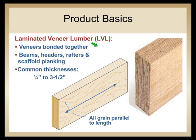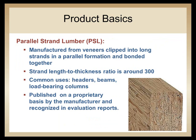LVL is available in a variety of thicknesses from three-quarter inch to three and a half inches. Parallel strand lumber, on the other hand, is not made from veneers of wood but is more similar to OSB in that it's manufactured from strands of wood. These strands are clipped together in a parallel formation as well, giving the entire width of the member that same parallel orientation, creating a very strong product suitable for use as a header, a beam, or load-bearing columns.